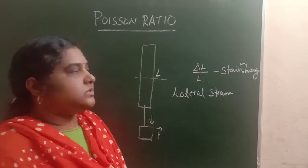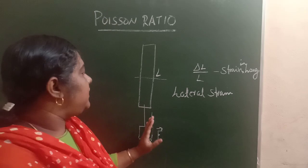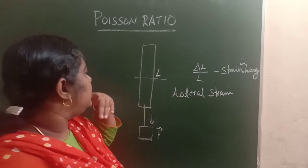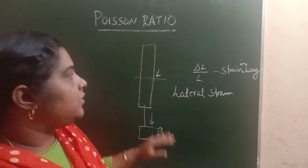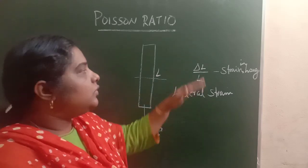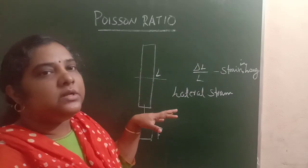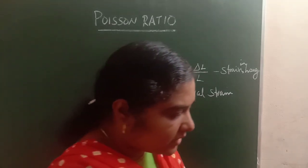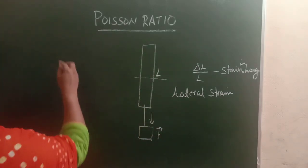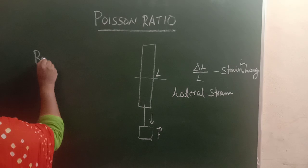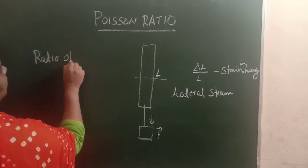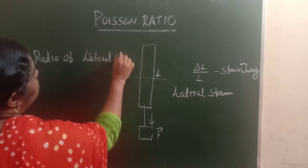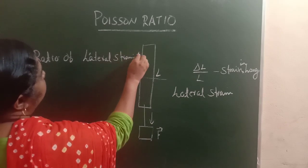At the same time there will be lateral strain in the perpendicular directions of the longitudinal strain. Now, Poisson's ratio is defined in such a way that it is the ratio of lateral strain to longitudinal strain.